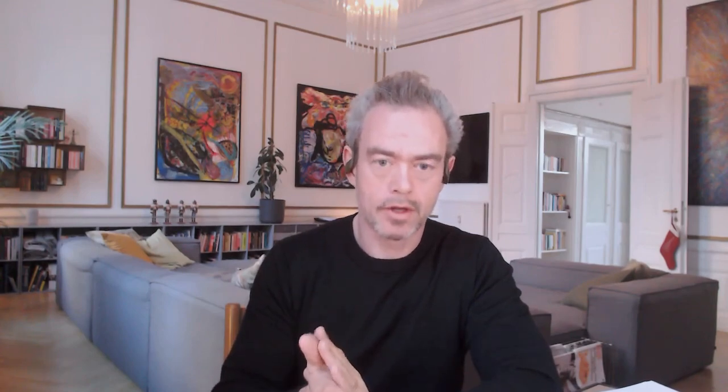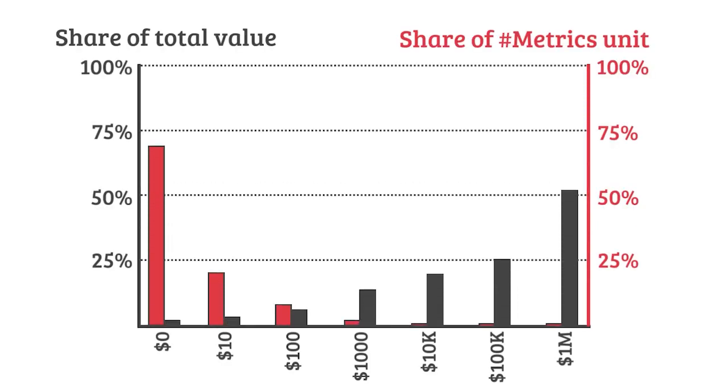Contrast that with power law distributed value. The patient example is a power law distributed value — a few patients have a value of a million and a lot of patients have a value of zero, which means the majority of value sits in a very few percentage points of the population measured by this pricing metric. In these cases, it can be really difficult to make a pricing metric work without specification of the metric — essentially acknowledging you're not really paying for the ones without value.